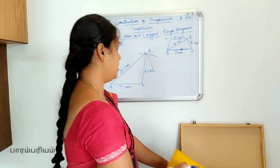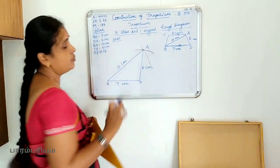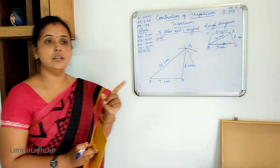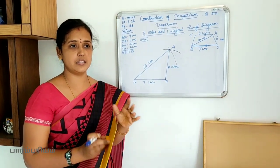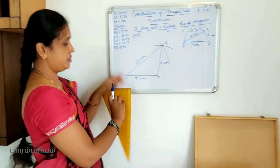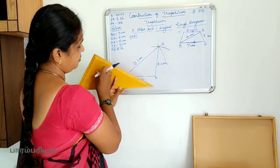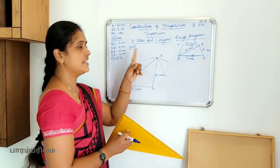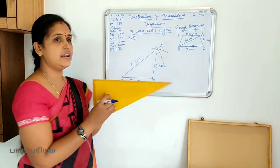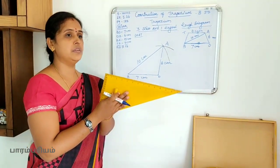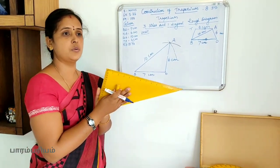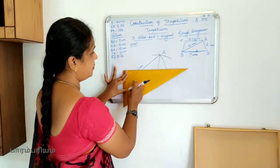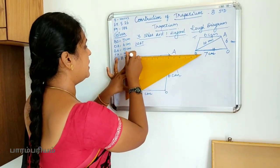Next, we need to draw a parallel line through A, since BO is parallel to TA. To draw a parallel line, we use a set square. Draw the parallel line AX through point A using the set square.